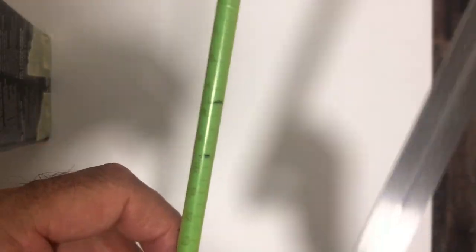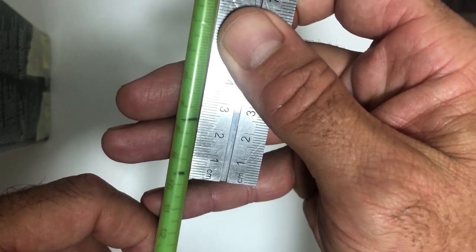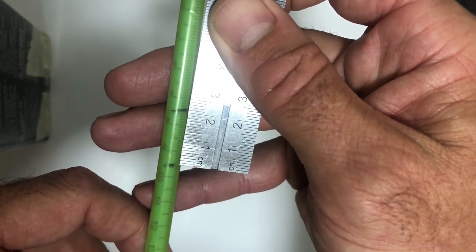Now that you have your two measurements, measure the distance between the two and in this case it's 21 millimeters.